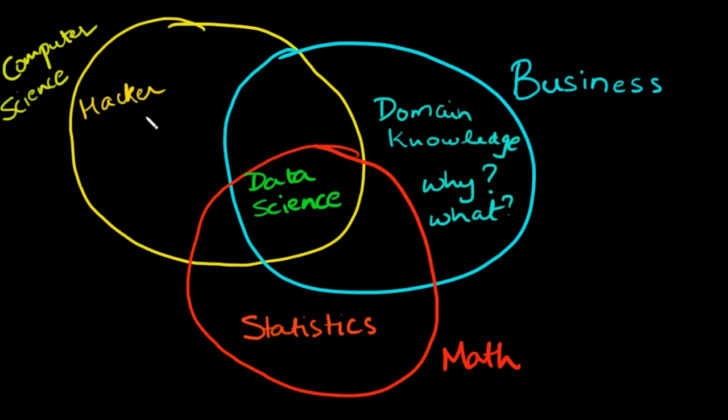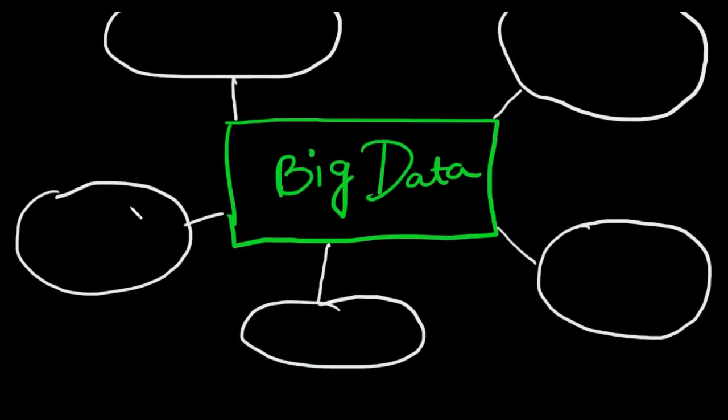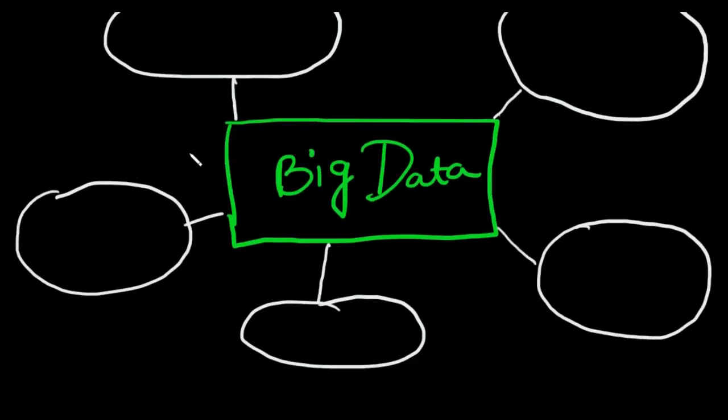Data science is relevant today because we have tons of data available now. We should worry about a lack of data. Now we have data deluge. In the past, we didn't have algorithms. Now we have algorithms.